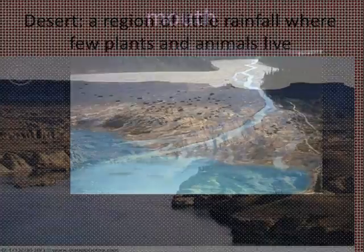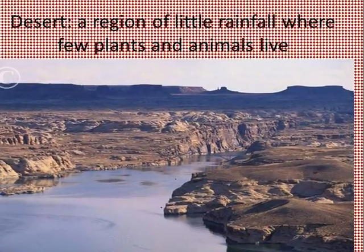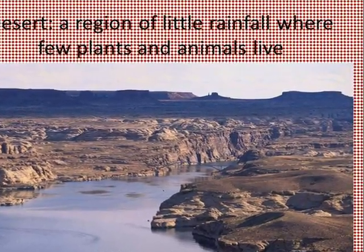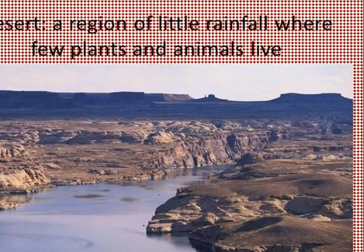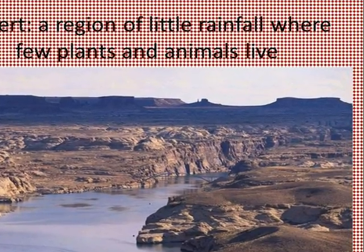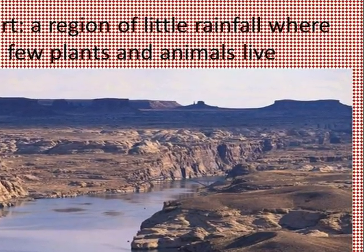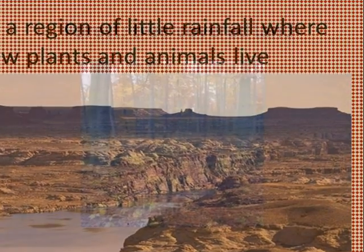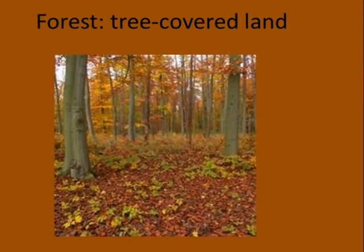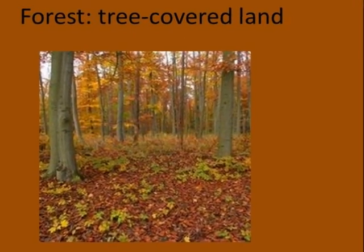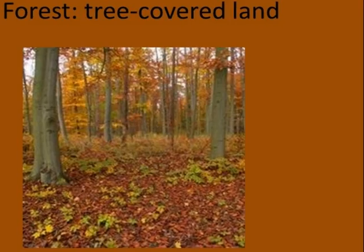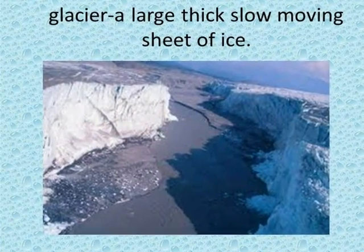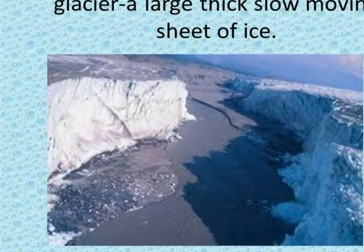A desert is an area of little rainfall where few plants and animals live. A forest is a tree-covered land. A glacier is a large thick slow-moving mass of ice.